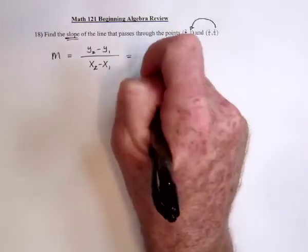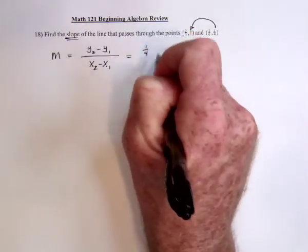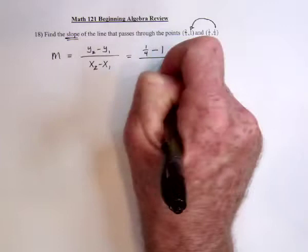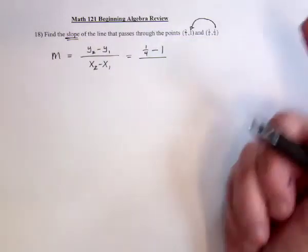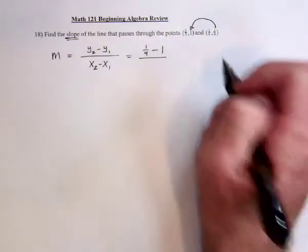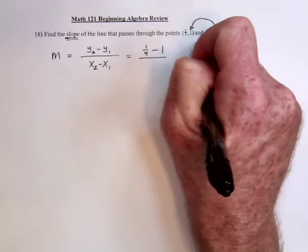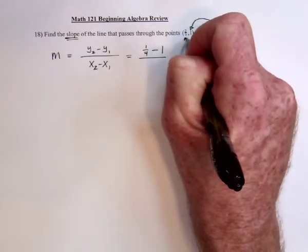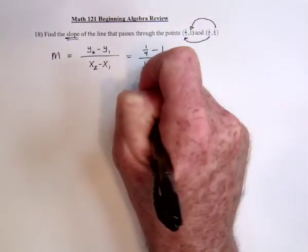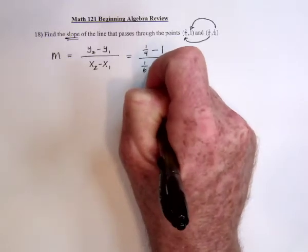So it's going to be 1 quarter minus 1. And then you have to be consistent. The arrow goes that direction. I have to do the same thing with the x's. The arrow has to go this direction. So 1 sixth minus 2 thirds.